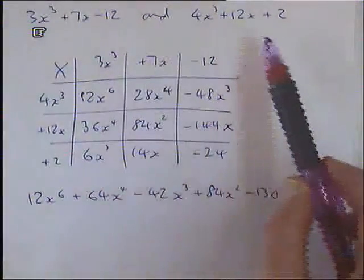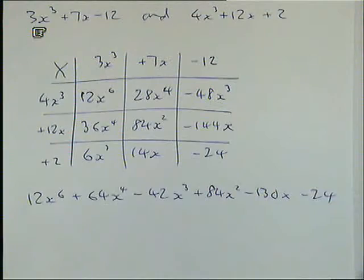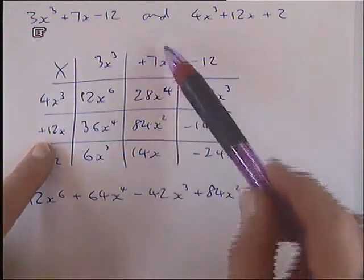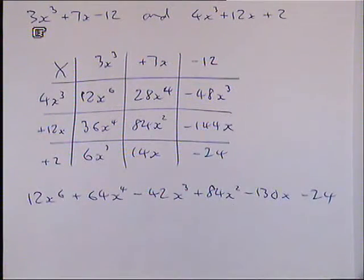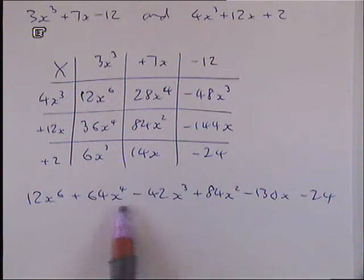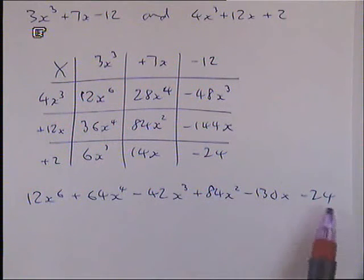We were multiplying these two polynomials together. We've done it in the grid. For example, this has come from timesing the 12x and the 7x together. We've then collected all the terms. There were terms in x to the 6. There weren't any in x to the 5. There were x to the 4, x to the 3, x squared, x's, and the numbers. And we get the whole thing.